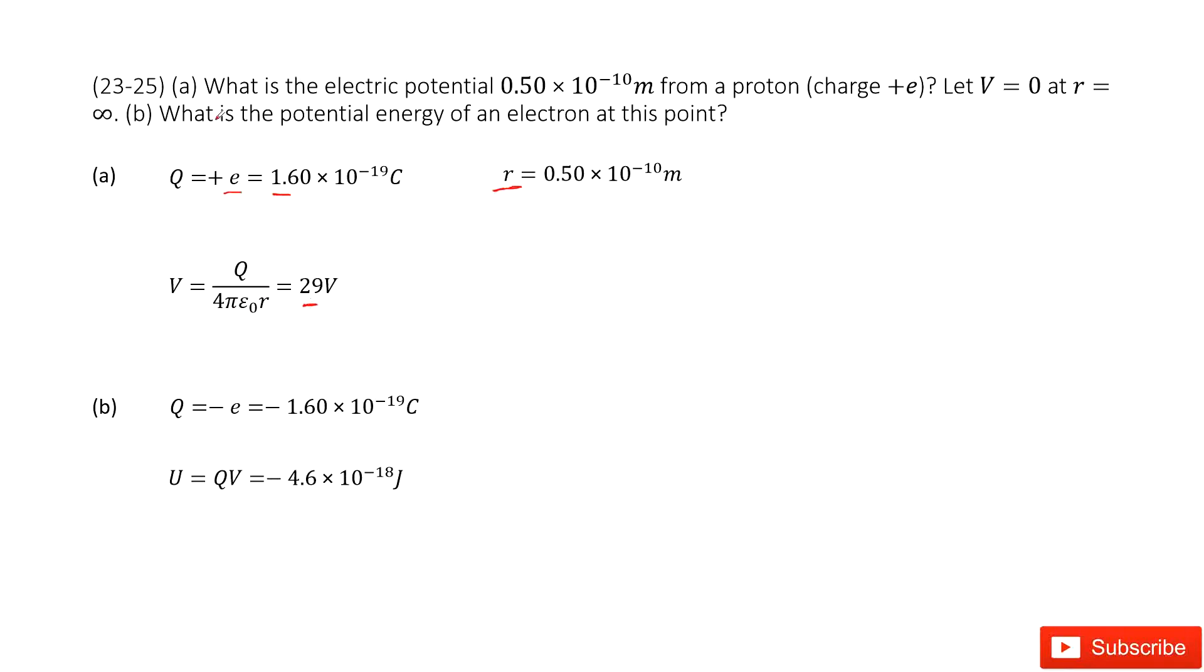Part (b) asks what is the potential energy of an electron at this position. The electric potential energy is U = qV, charge times the potential.